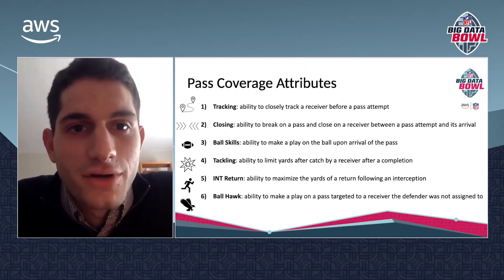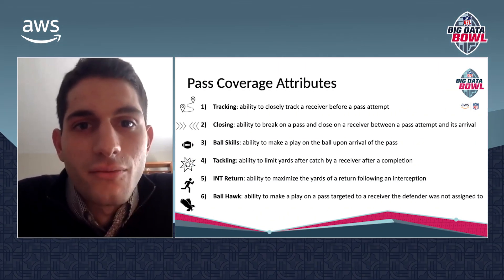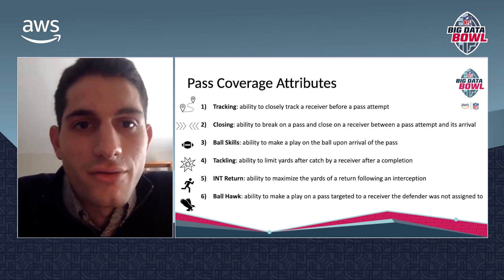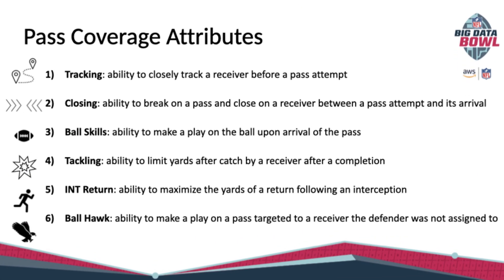The six pass coverage attributes that we decided to focus our submission on were, as we defined them: tracking, closing, ball skills, tackling, interception return, and ball hawk abilities. These traits really capture the skills needed to defend against the pass from the beginning to the end of a play.